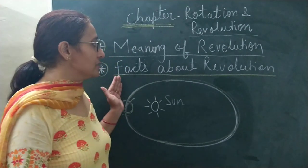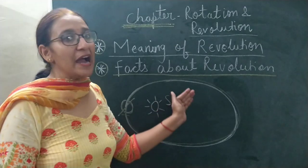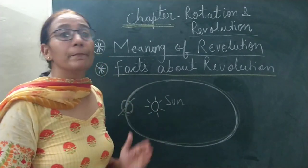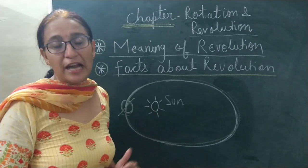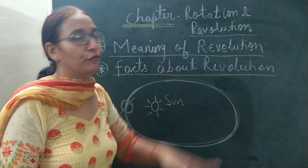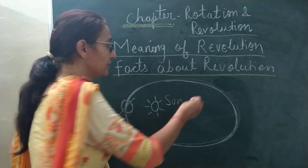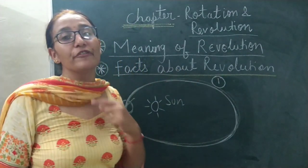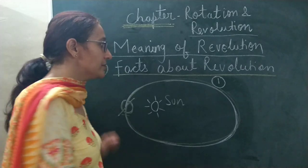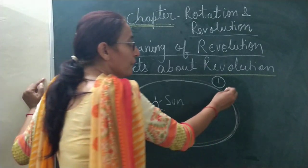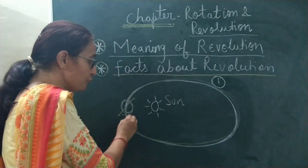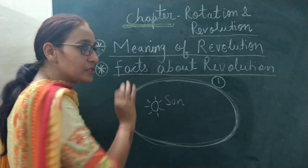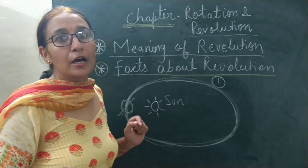Now, what are the interesting facts about revolution of the earth? There are some major interesting facts that you should know. So let us learn one by one. The first interesting fact is: when the earth moves around the sun, this motion is called revolution.